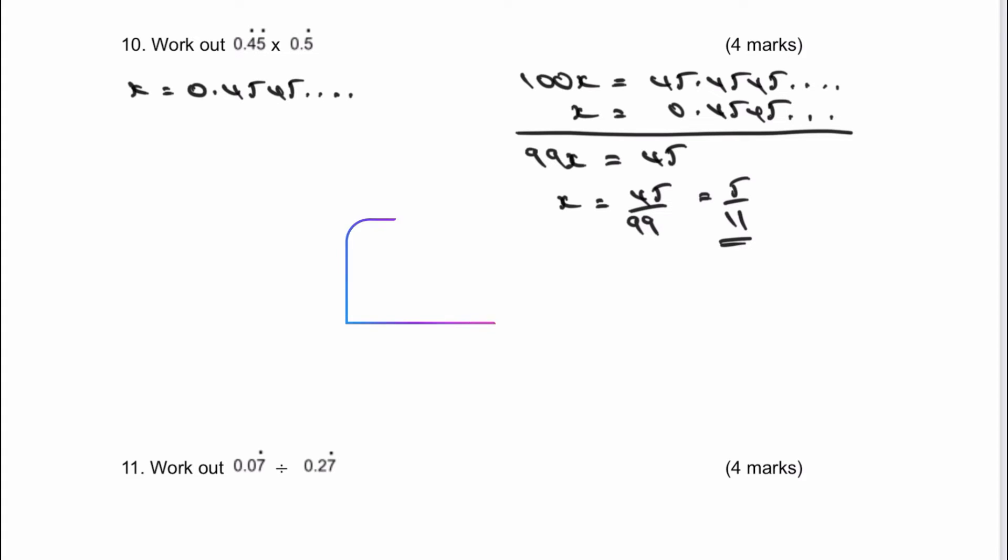So what we're going to do now is do exactly the same for the second one. I've got x equals 0.555 and so on. So therefore, I can rewrite that as 10x equals 5.555 recurring. Take away my value, my original value of x, which is 0.555.